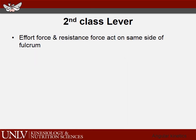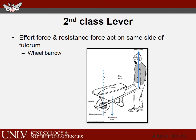A second-class lever has the effort force and resistive force acting on the same side of the fulcrum. The classic example is the wheelbarrow, where both the resistive and effort forces are on the same side — the effort arm is greater than the resistive arm, giving a mechanical advantage greater than one. In the body, this corresponds to toe raises: the fulcrum is at the ball of the foot where the toes contact the ground, the resistive force arm and effort force arm orientation gives a mechanical advantage greater than one.